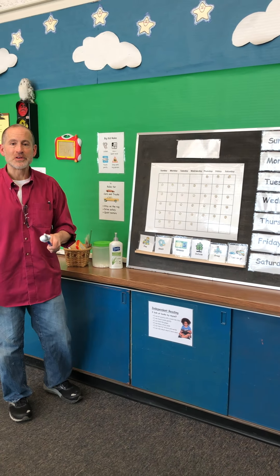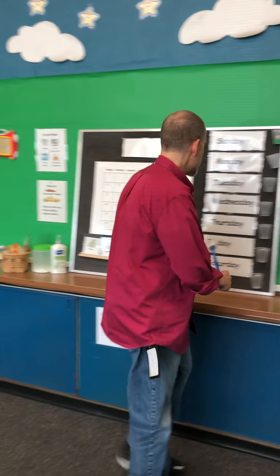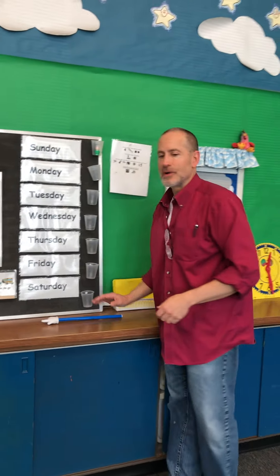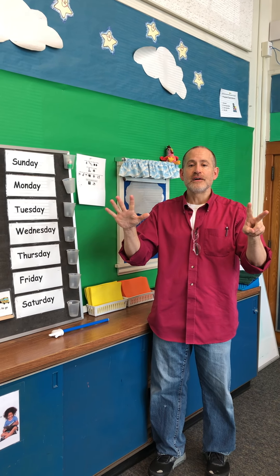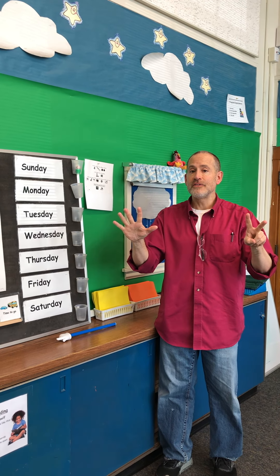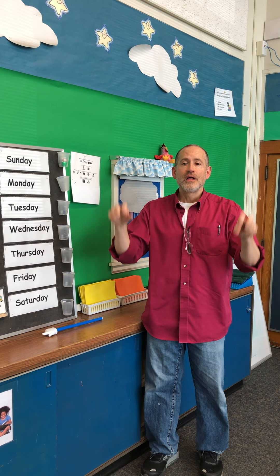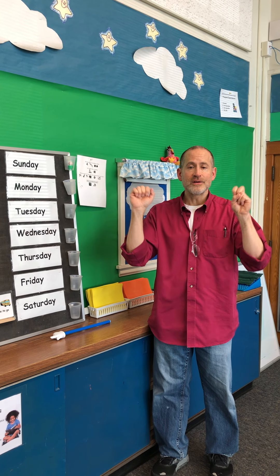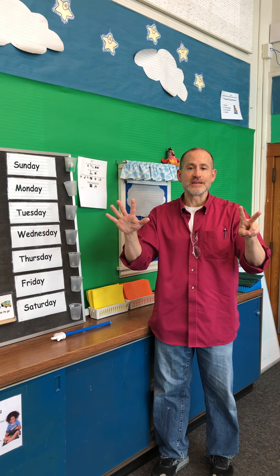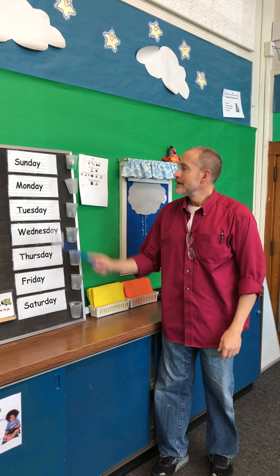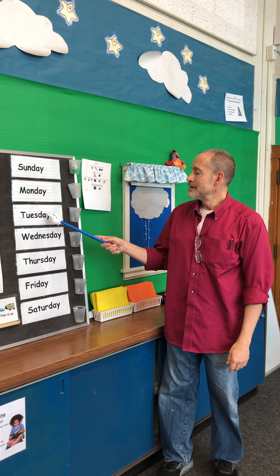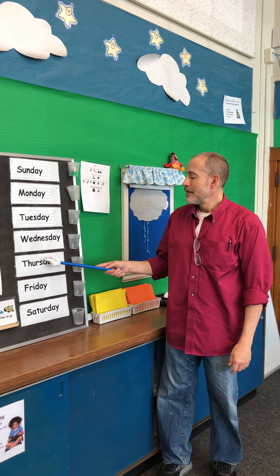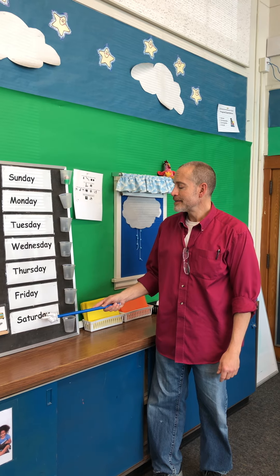Let's take a look at what day it is today. Get your hands out — get five fingers on one side and two on the other, and that makes seven days. There are seven days, there are seven days, there are seven days in a week. Sunday, Monday, Tuesday, Wednesday, Thursday, Friday, Saturday.